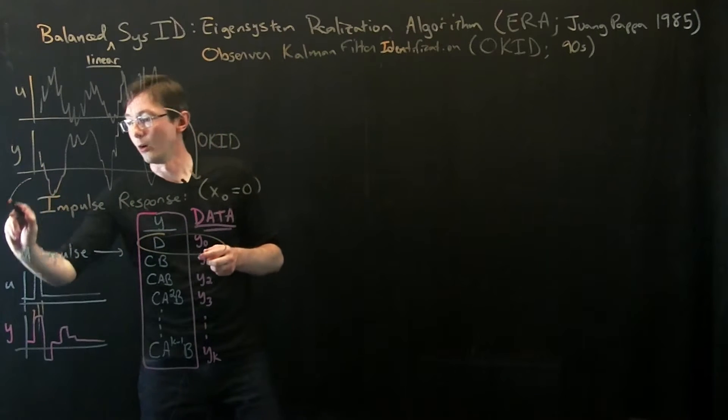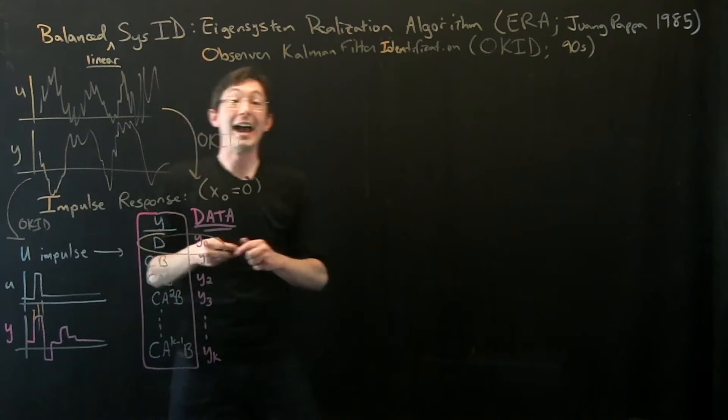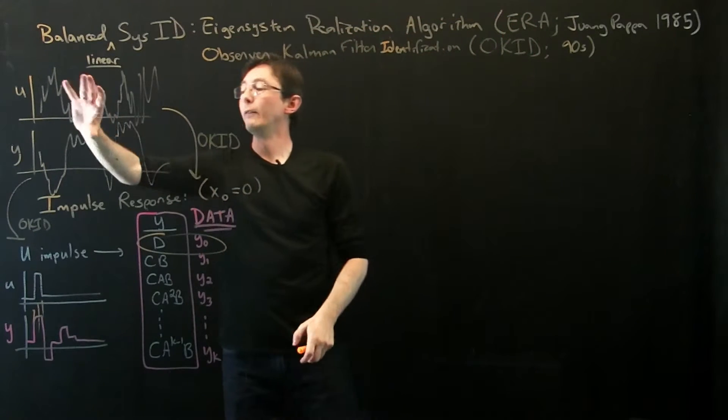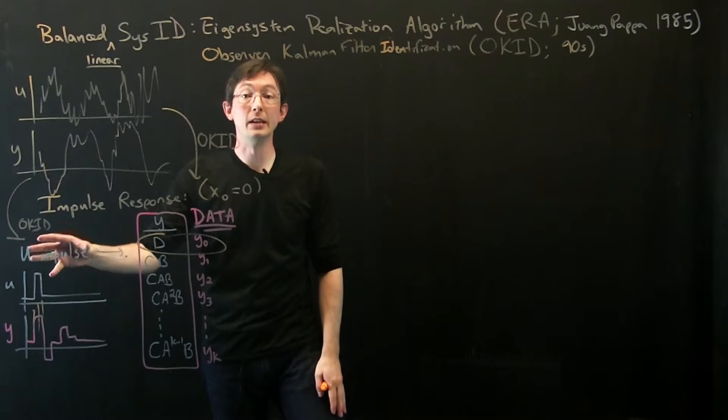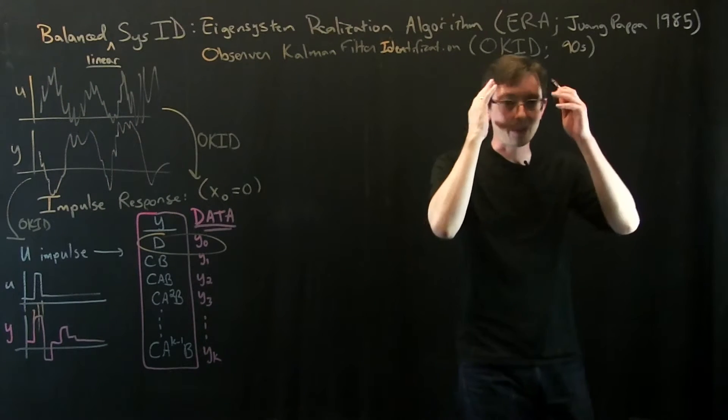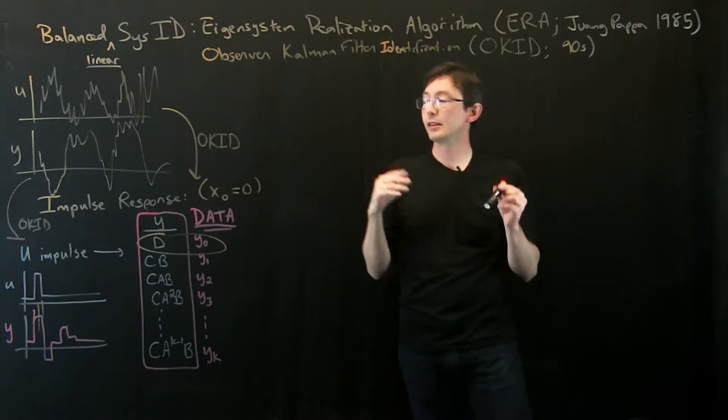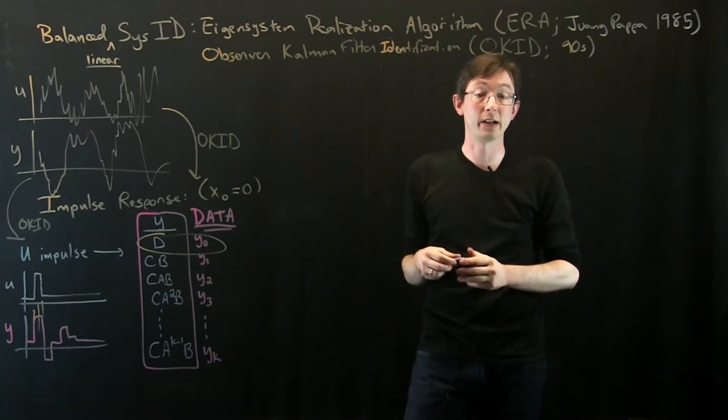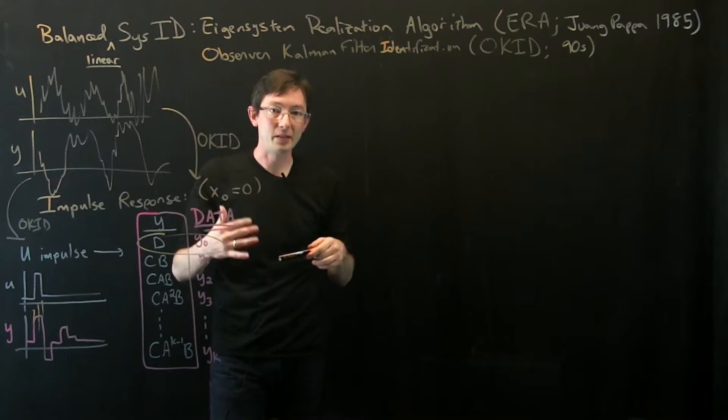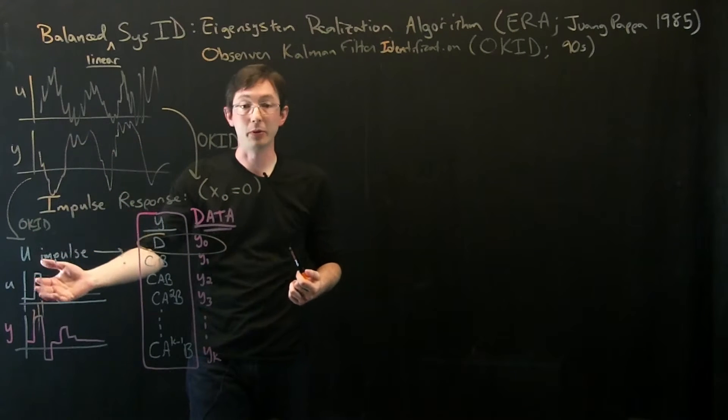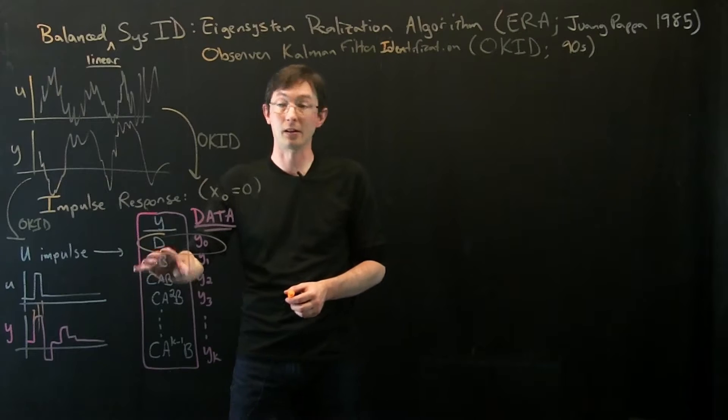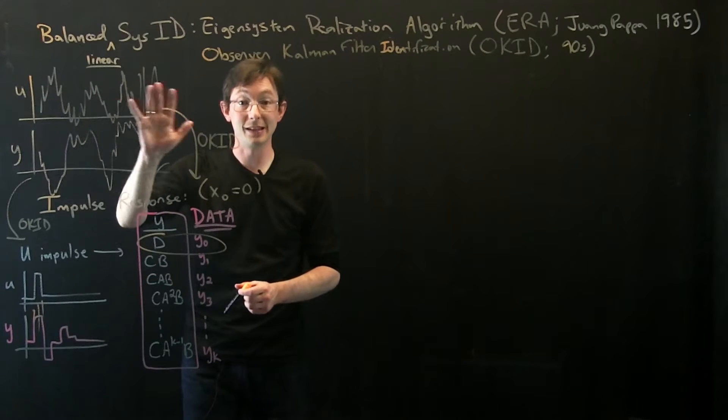What OKID does, maybe I should drop down here, what OKID does is it estimates kind of an optimal Kalman filter estimator of what the impulse response would have been that is most consistent with this input-output data for non-impulse responses. So I think about this really in terms of a schematic. There is some heavy math under the hood of Observer Kalman Filter Identification. It's a very cool idea.